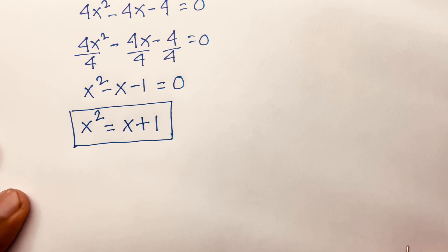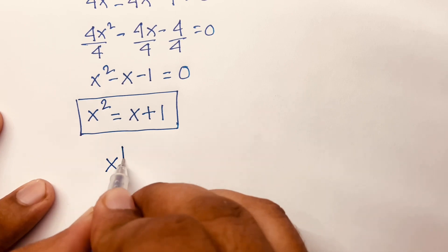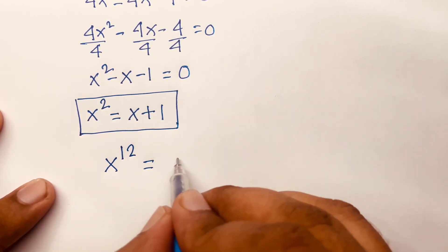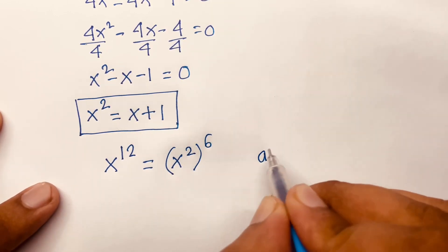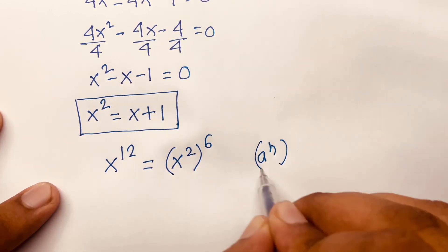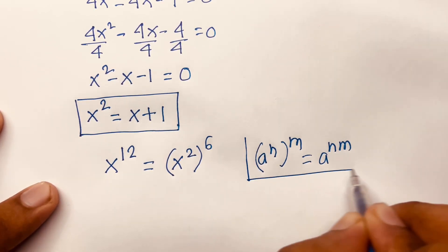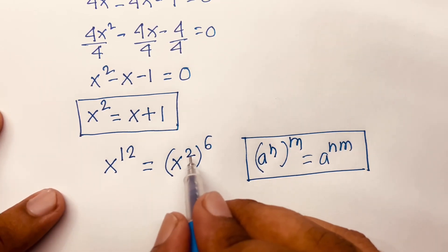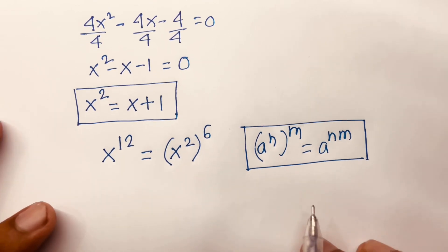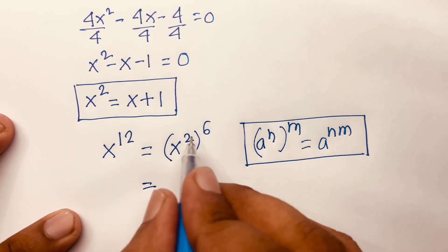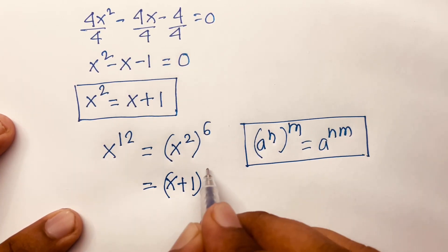Our target answer is x to the power 12. I can write x to the power 12 as (x squared) to the power 6. We know that (a^n)^m equals a^(nm), so this becomes (x squared)^6. Since x squared equals x plus 1, this becomes (x plus 1) to the power 6.